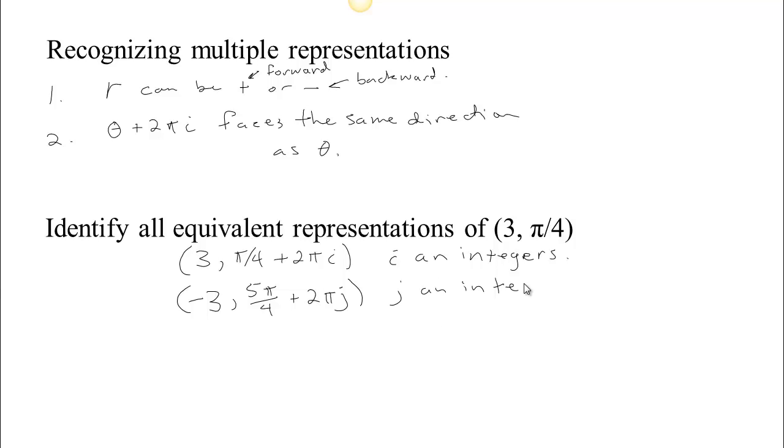So with j any integer here, so now we have all of the possible representations of this point. You can walk forward 3 to get to this location and you can face an angle of π/4 or any angle that has you facing in the same direction as π/4. Or you can face the angle opposite of π/4 or any angle that has you facing the same direction as the opposite of π/4 and walk backwards to get to that location. So we found all the representations, all of those infinitely many possible representations.